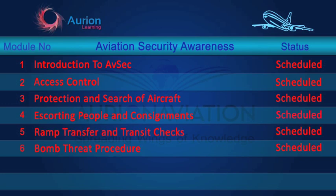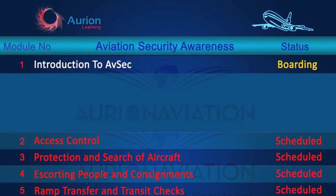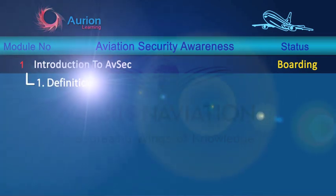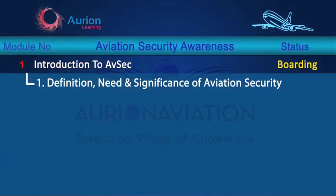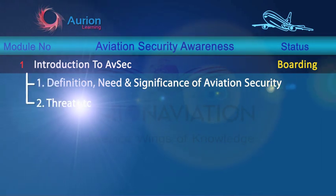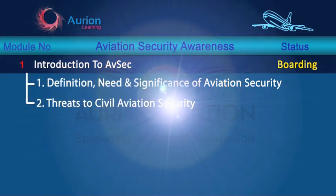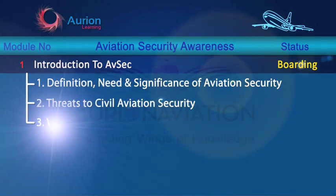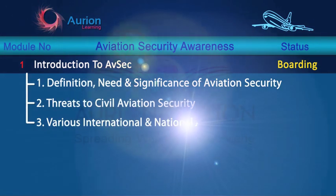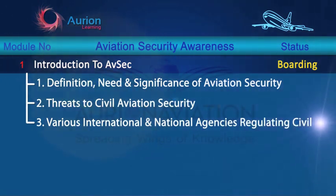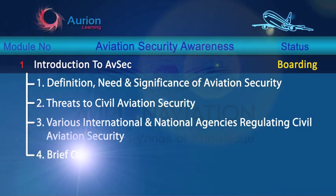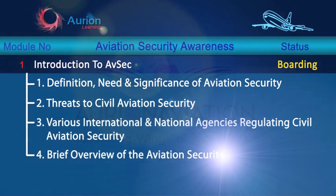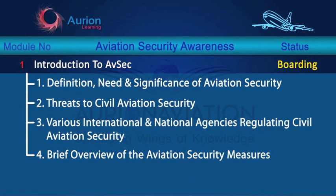Module 6: Bomb Threat Procedure. Let's start with our first module, in which we will cover: Definition, Need and Significance of Aviation Security; Threats to Civil Aviation Security; Various International and National Agencies Regulating Civil Aviation Security; and a Brief Overview of the Aviation Security Measures.